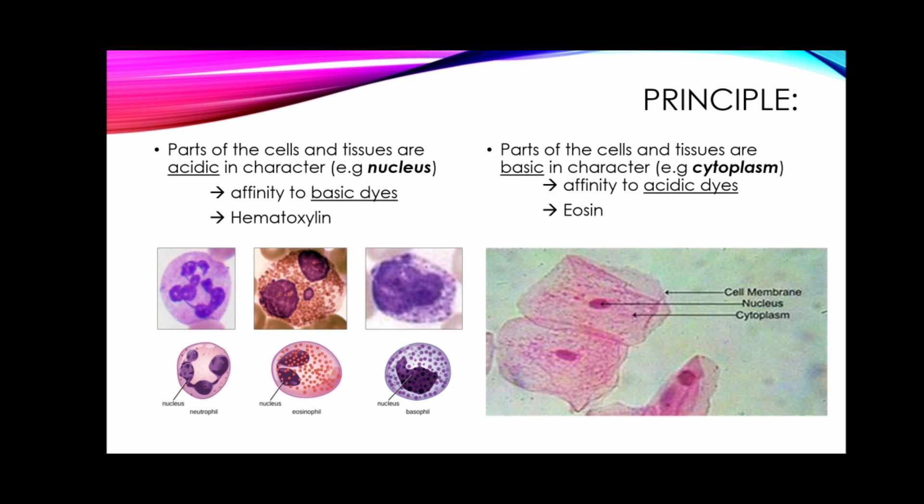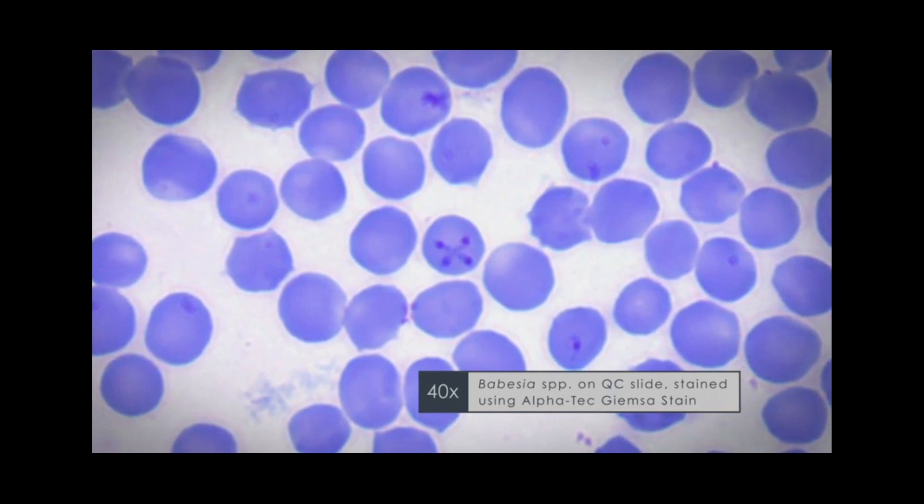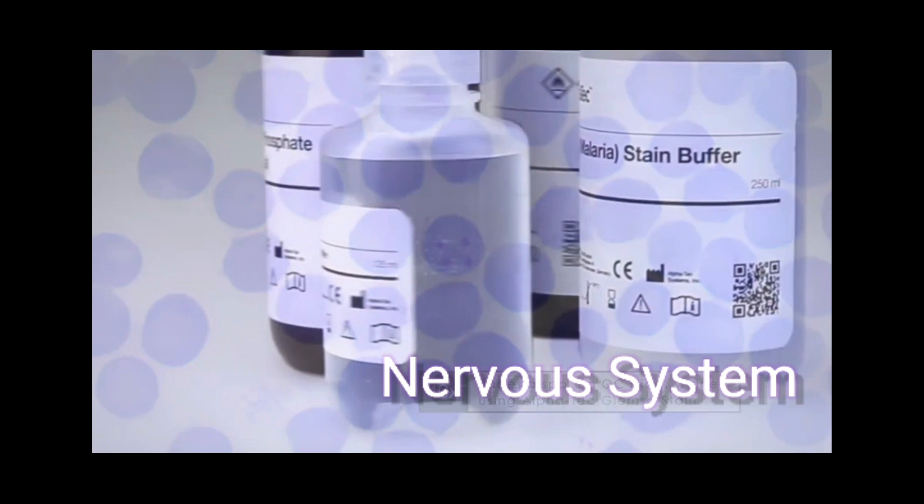Impregnation is a related procedure that makes use of heavy metal salts, which are selectively precipitated on certain cellular and tissue components. It is specially utilized for silver staining of the nervous system and is also used to demonstrate reticulin.